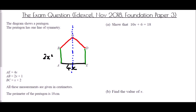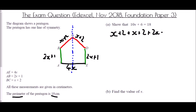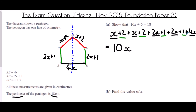BC = x + 2, and because of the line of symmetry CD = x + 2 as well. Adding all sides for the perimeter: (x + 2) + (x + 2) + (2x + 1) + (2x + 1) + 4x. Collecting x terms: x + x + 2x + 2x + 4x = 10x. Collecting constants: 2 + 2 + 1 + 1 = 6. So the perimeter expression is 10x + 6.